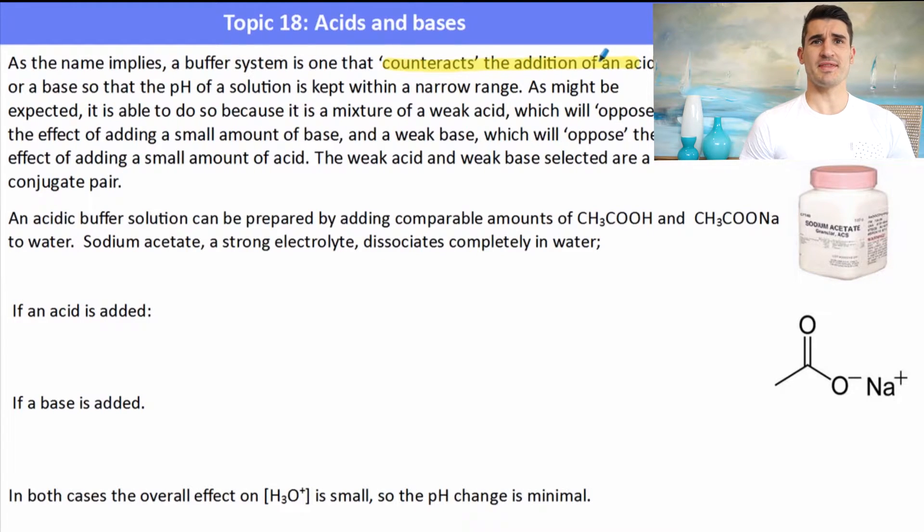Now a buffer system is one that counteracts either the addition of an acid or a base, keeping the solution within a narrow range of pH. So we can mix a weak acid and its conjugate base to form a buffer. We can also mix a weak base and its conjugate weak acid to form a buffer. But a buffer must have the weak acid and the weak base as its conjugate pair. It must have both in it.